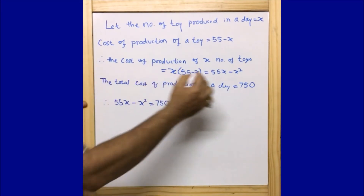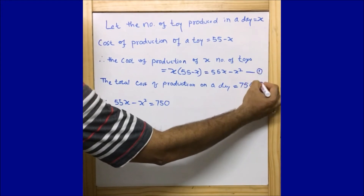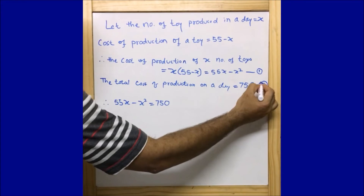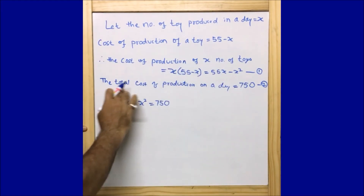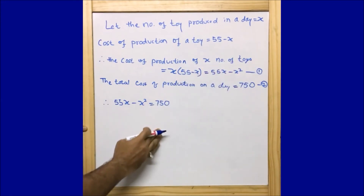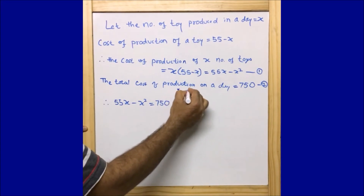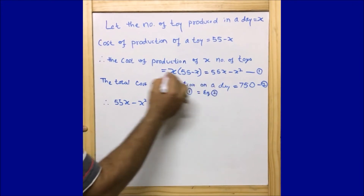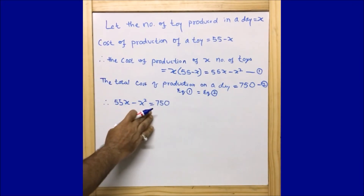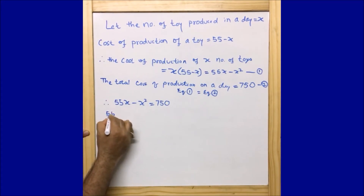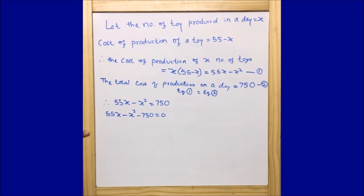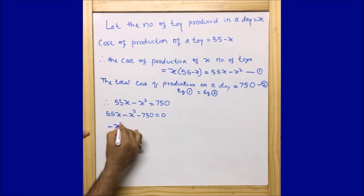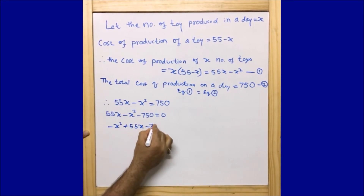This equation — the total cost of production of x toys is 55x minus x², whereas the given figure is 750 — so equation 1 equals equation 2. Therefore I can write 55x minus x² is equal to 750, or in other words 55x minus x² minus 750 is equal to 0. Now let us arrange this as per the quadratic equation standard form ax² plus bx plus c equals 0. So I write: minus x² plus 55x minus 750 is equal to 0.